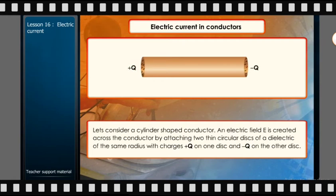Let's consider a cylinder-shaped conductor. An electric field E is created across the conductor by attaching two thin circular disks of a dielectric of the same radius with charges plus q on one disk and minus q on the other disk.